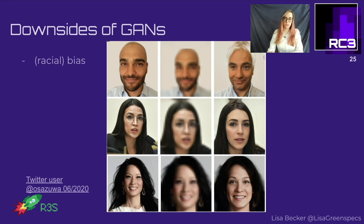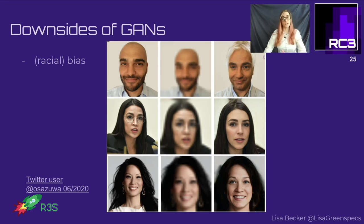Not only do GANs produce pictures with bias, but similar techniques are used to predict the probability of which accused people would commit crime again. This also shows a substantial racial bias, with people of color receiving longer sentences because judges use such biased software.